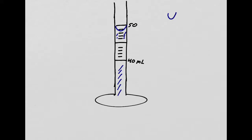One thing you're going to notice in lab: water has a meniscus. Water is not flat — it's going to have a meniscus. We call this a meniscus; it's kind of like a concave shape. You read the bottom of the meniscus. Water loves glass, so it actually tries to attach to the glass — that's why water has a meniscus. So you're going to see in lab, water is not going to look flat; it's actually going to have a little meniscus.